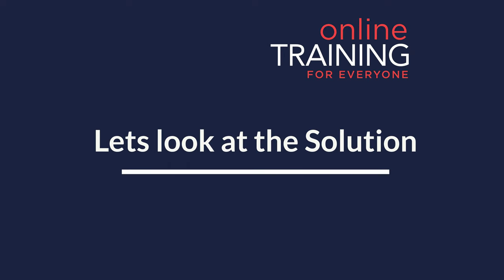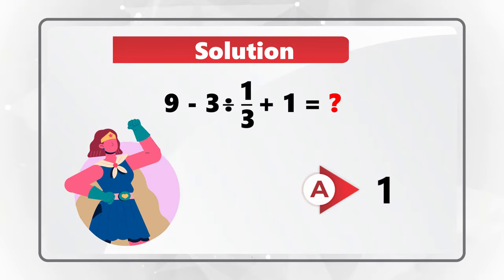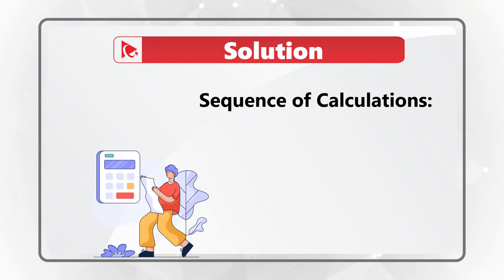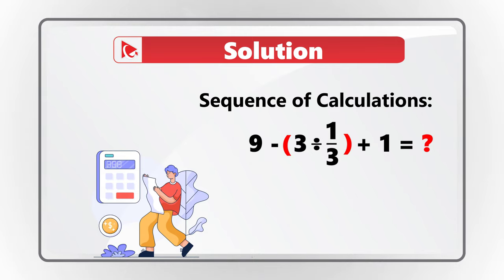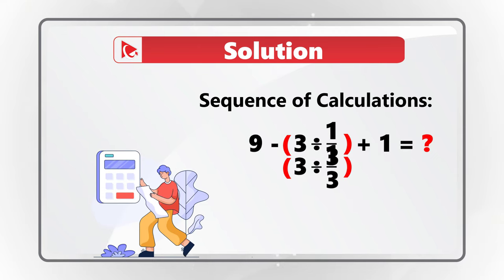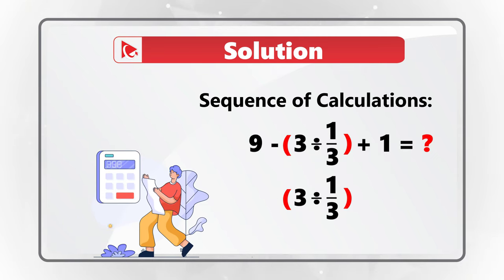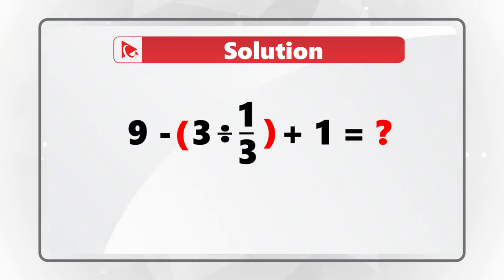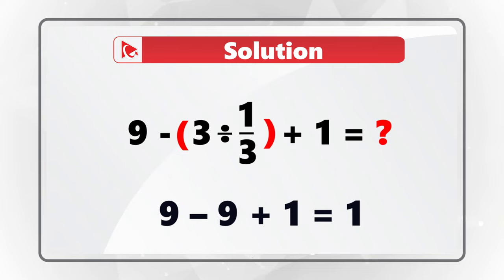The correct answer here is Choice A, 1. If you look at the expression closely, you will see that the first part to be calculated is the division — dividing 3 by 1 third. When you calculate 3 divided by 1 third, you will get 9. Then you need to do sequentially subtraction and then addition: 9 minus 9 equals 0, plus 1 equals 1. This is the reason the correct choice is Choice A, 1.